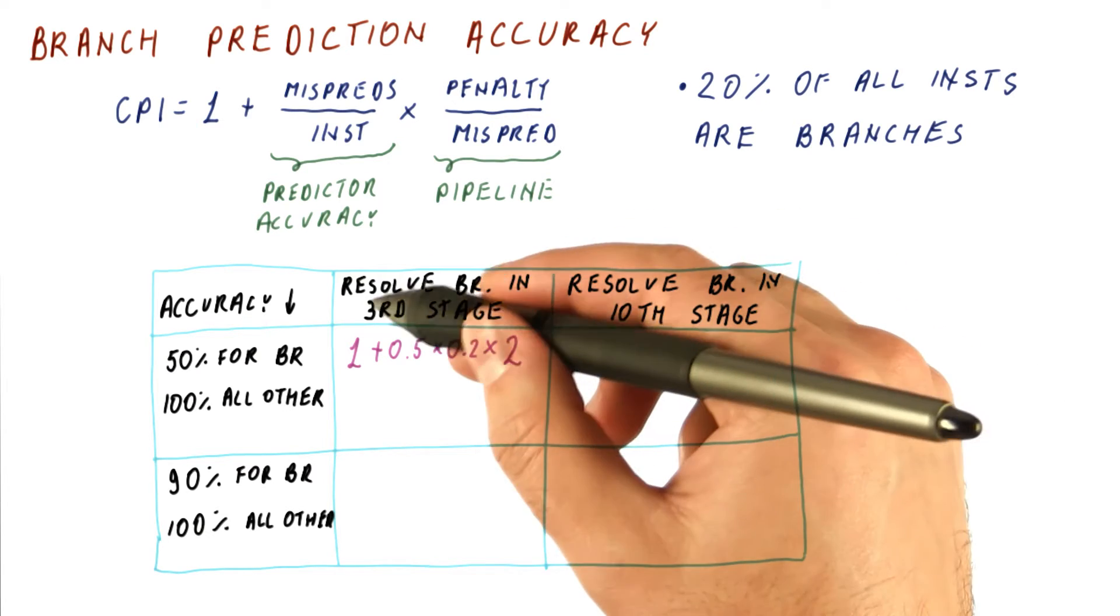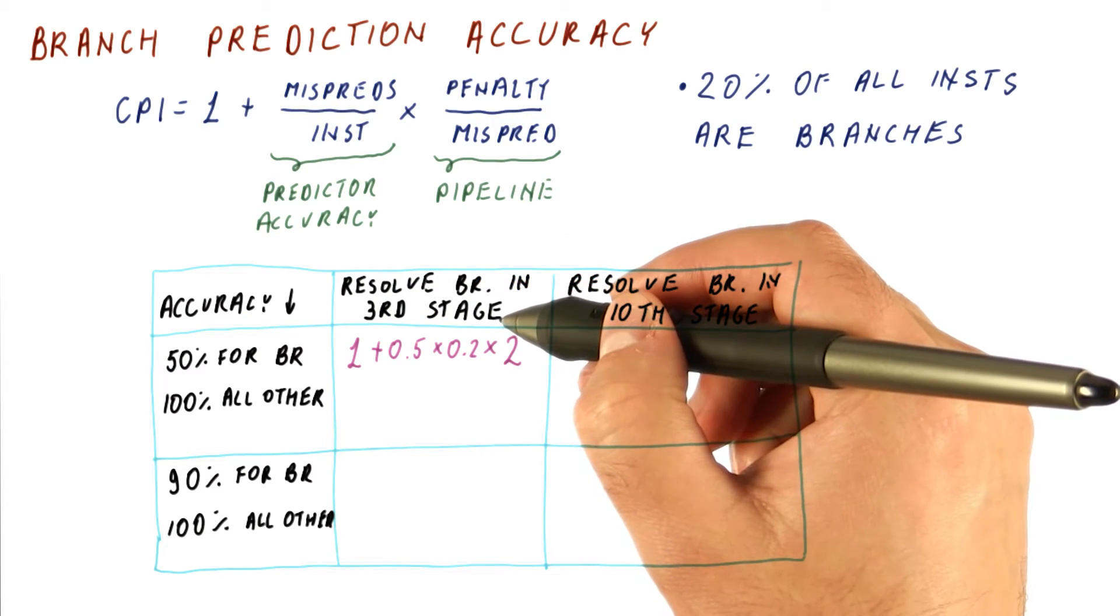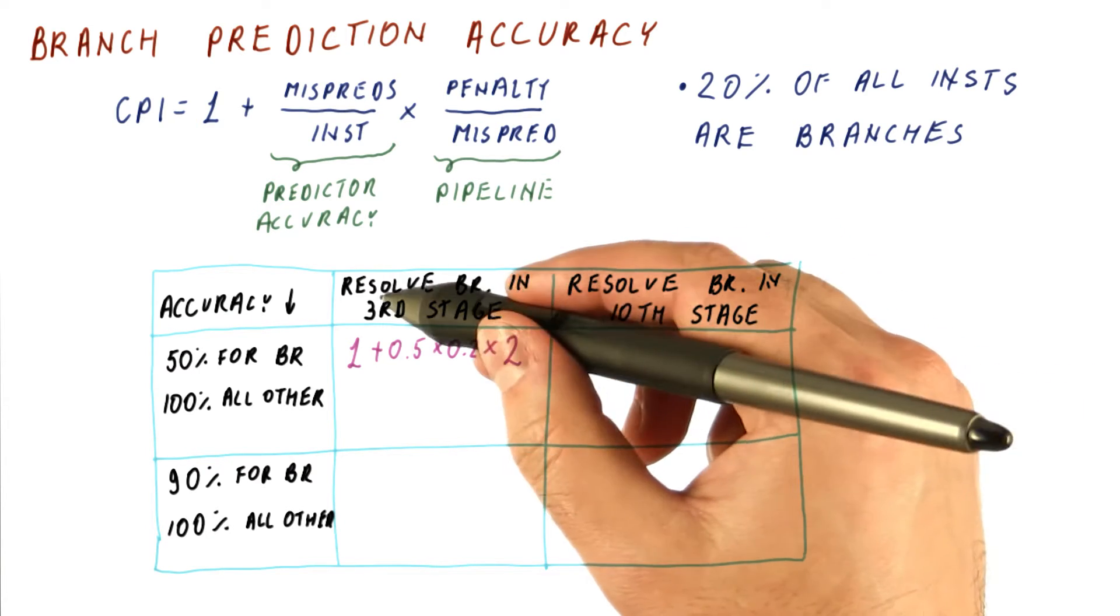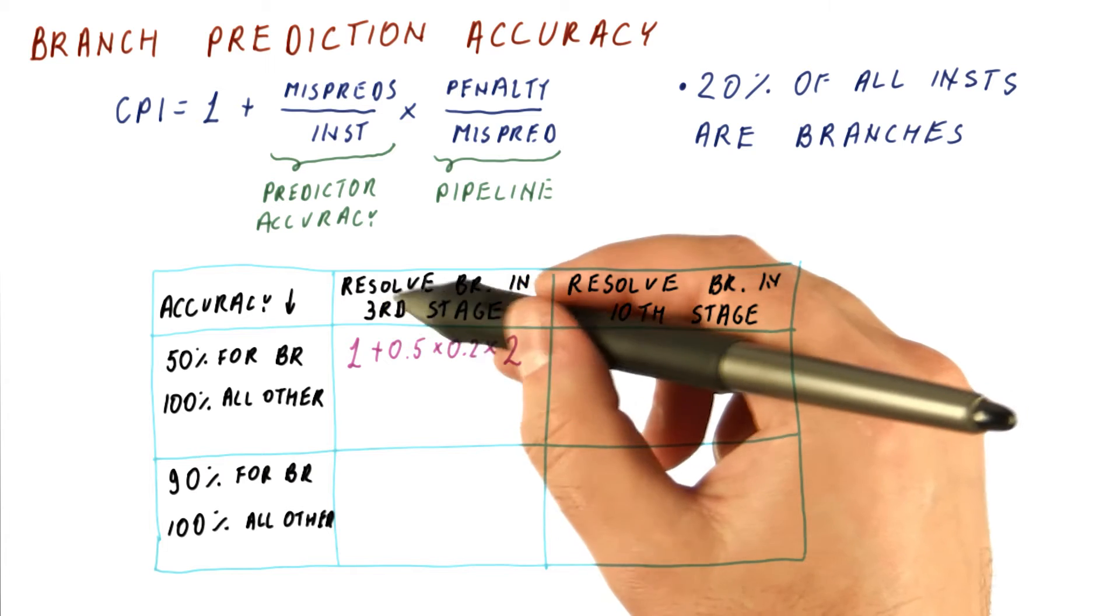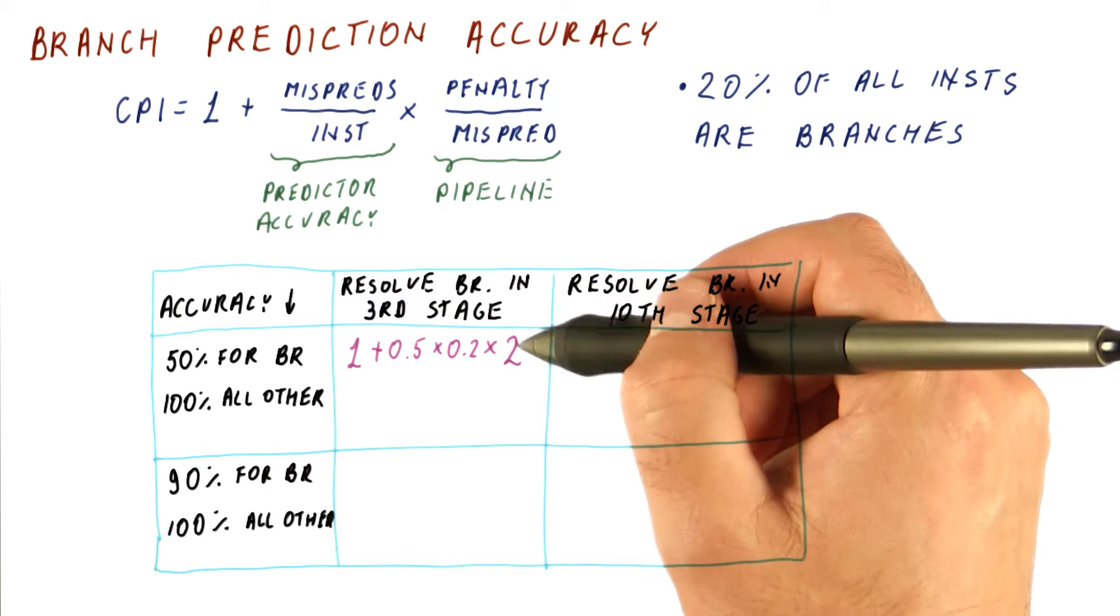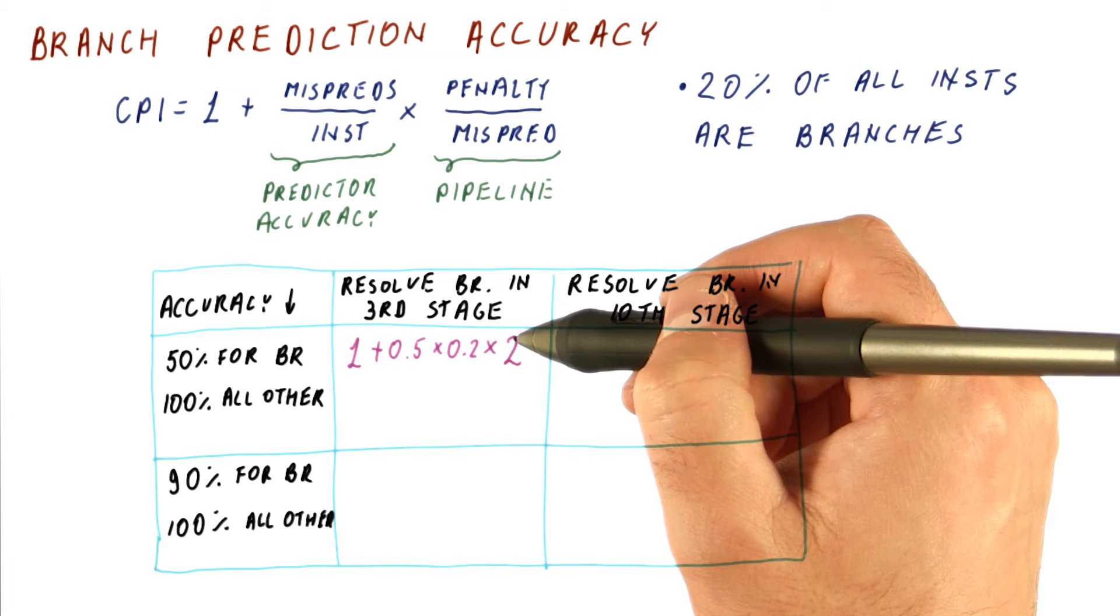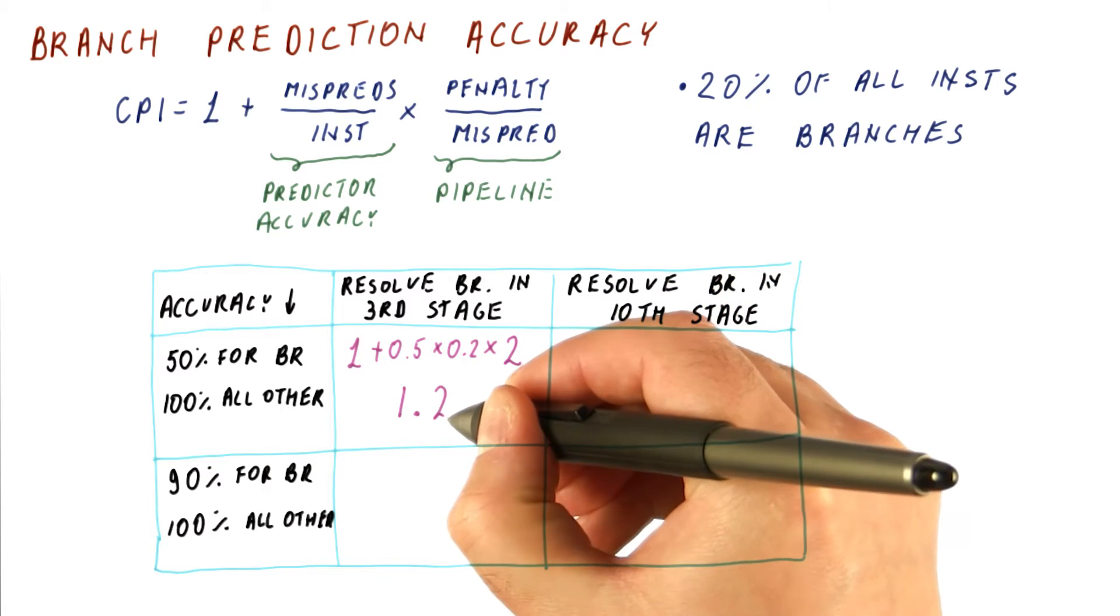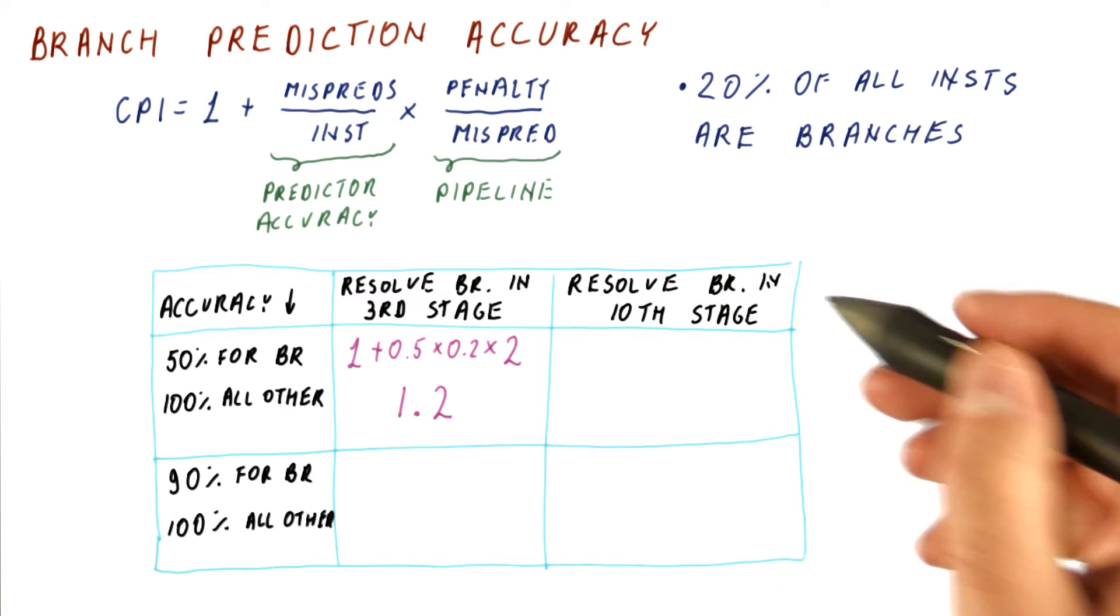Note that if we resolve the branch in the first stage, then there would be no penalty. Because next cycle we can fetch the correct instruction. So branches being resolved in some stage means that we pay one cycle less than that in penalties. And we get an overall CPI of 1.2 here.